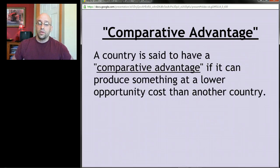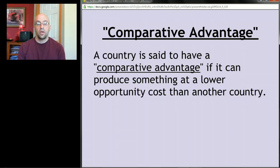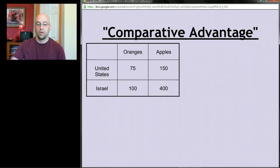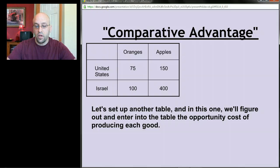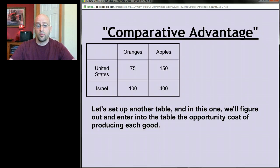A country has a comparative advantage if it can produce something at a lower opportunity cost than another country — that's the key term: lower opportunity cost. We're going to set up another table representing the opportunity costs for each country to produce each of the two goods, oranges and apples.